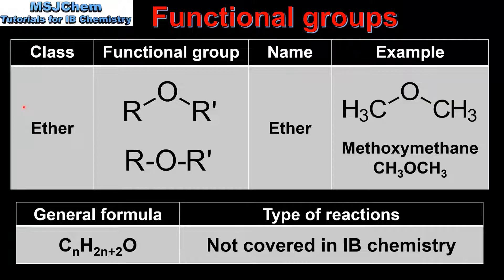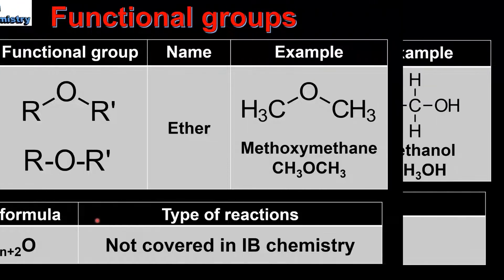Next we look at ethers. The ether functional group is an oxygen atom bonded to two alkyl groups which can be the same or different. The class and functional group name is ether. Here we have an example of an ether which is methoxymethane. The general formula of an ether is CnH2n+2O. The reactions of ethers are not covered in IB chemistry.